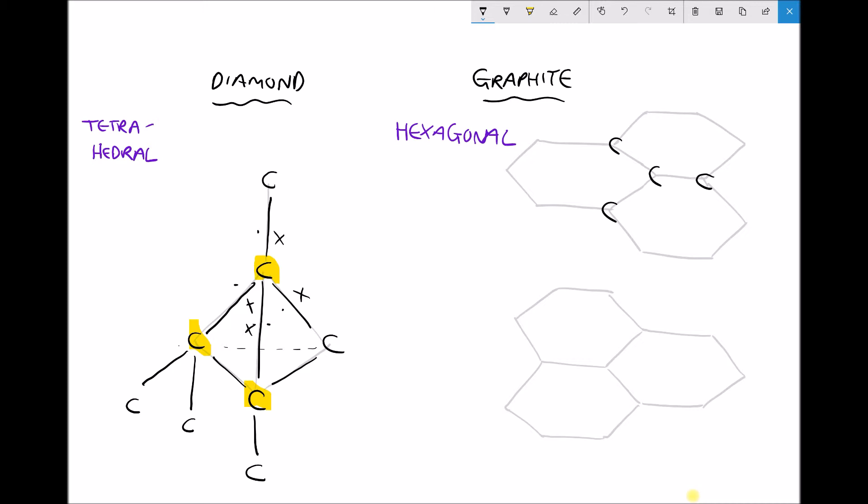So what we end up with in diamond is a regular structure but also a huge covalent network where all of the atoms in that network are stable.